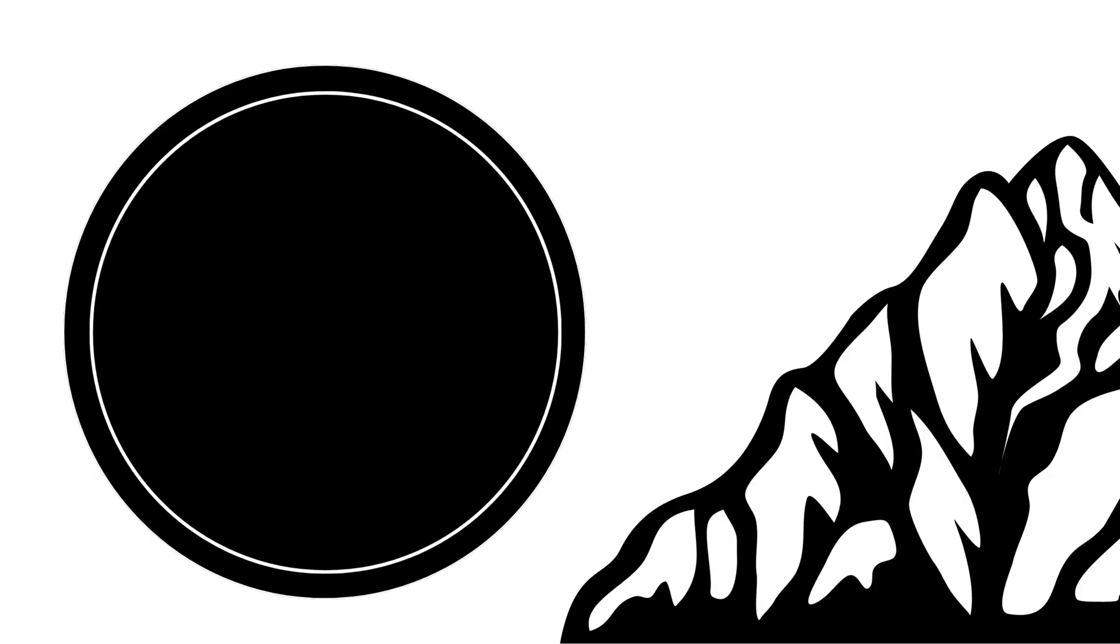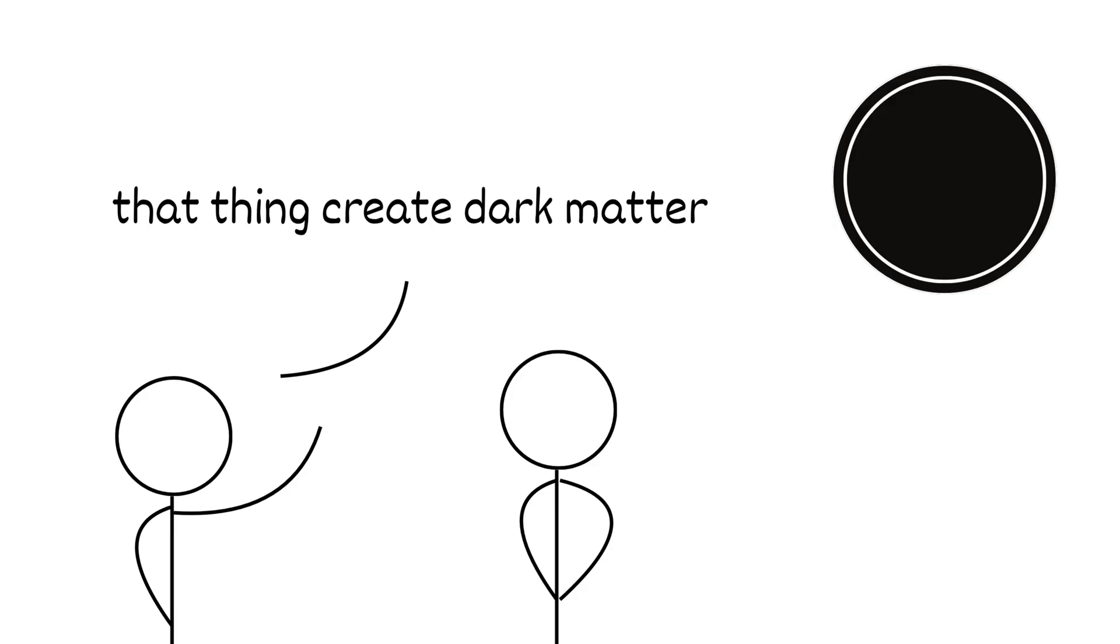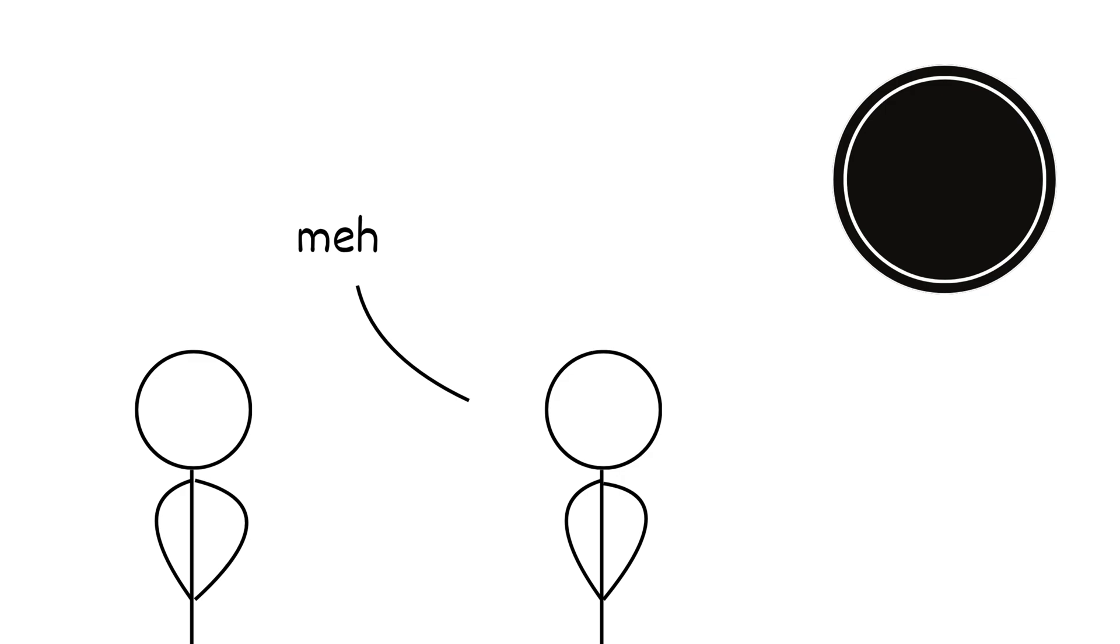They could be super small, smaller than an atom, or as big as a mountain. If they exist, they've been drifting through space for over 13 billion years. Some scientists think they could make up dark matter, the invisible stuff that holds galaxies together, but that we can't see. Others think they might have all evaporated by now.